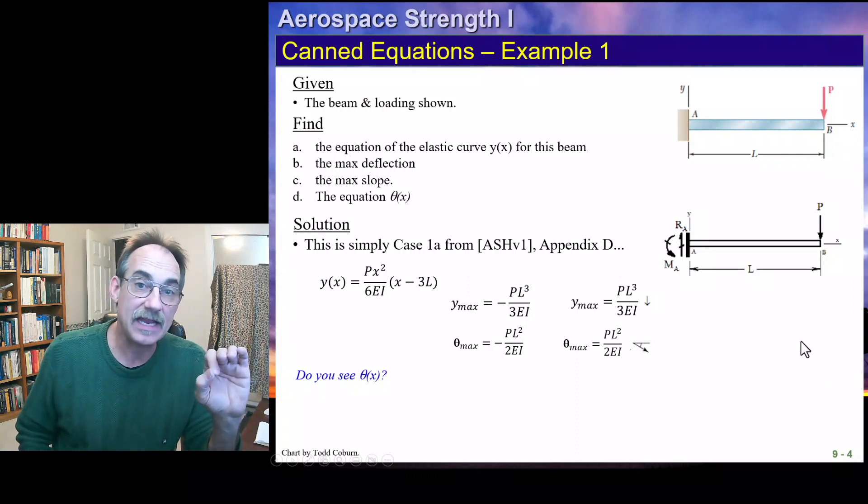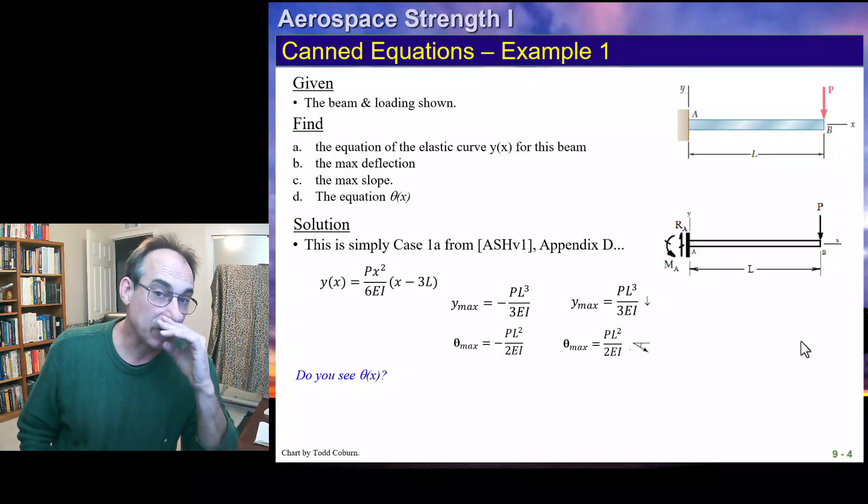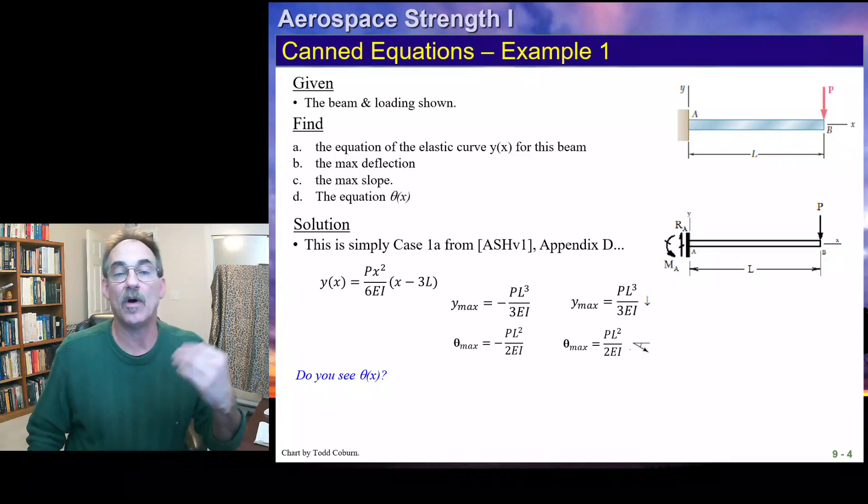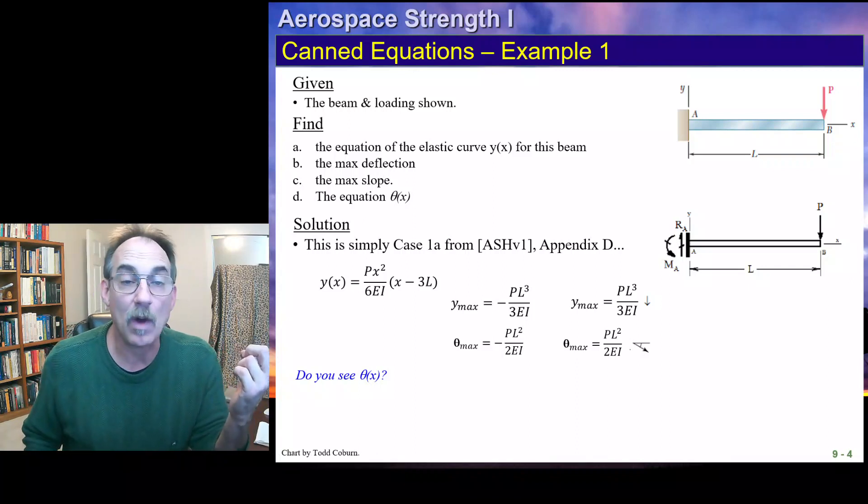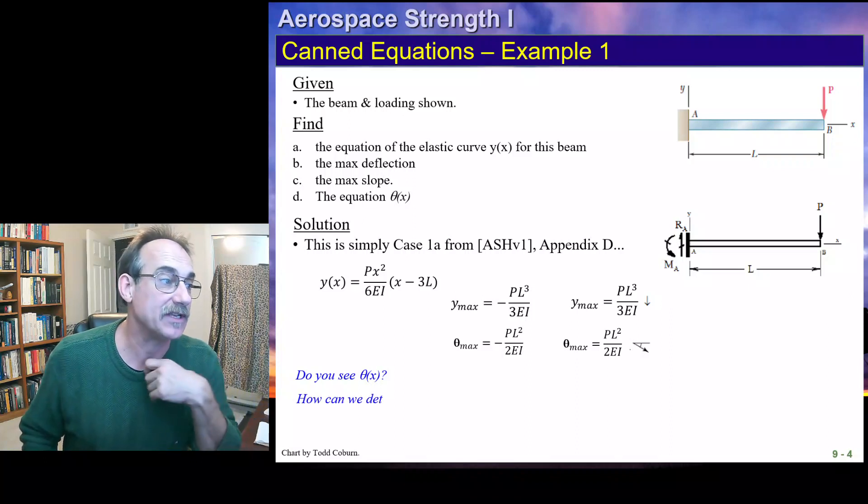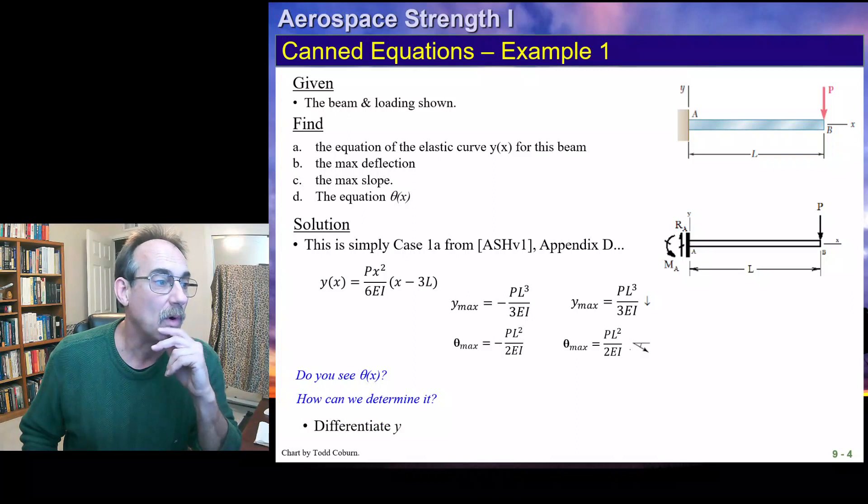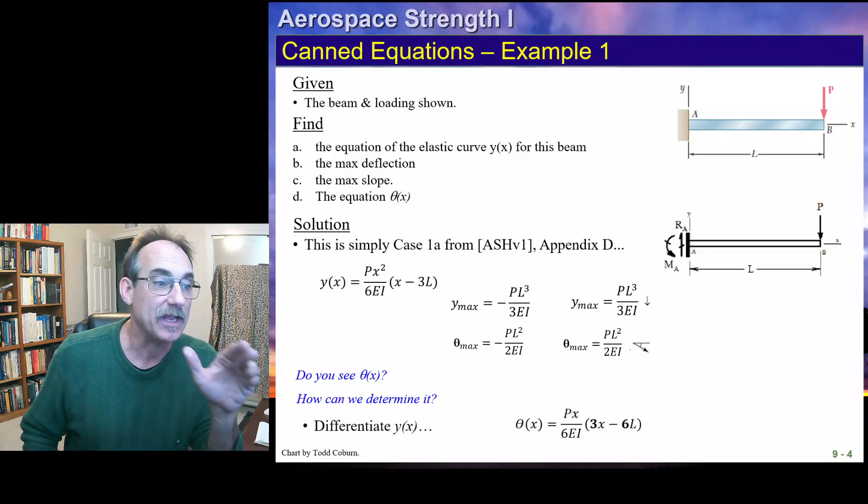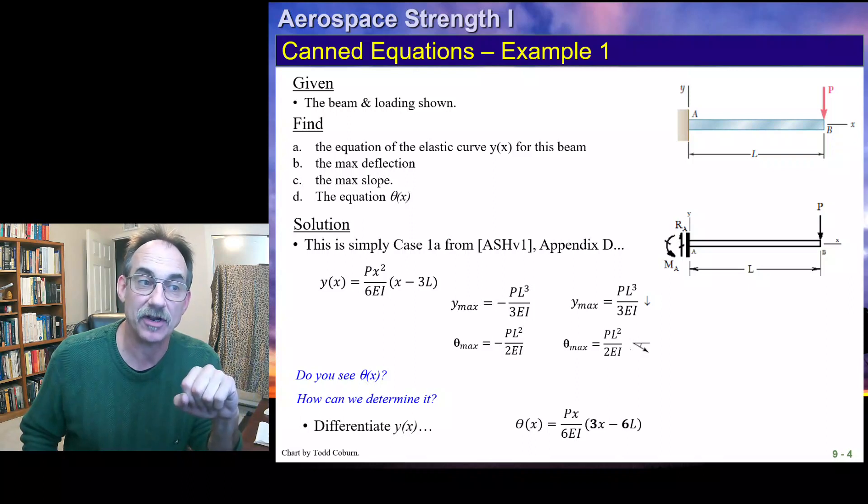Now, you'll notice there's no theta here, so in this particular case, if we want the slope of the beam, all we need to do is go back to our y of x function, differentiate it once, and that will give us the relation for the slope. And we can do it this way. That's that differentiation, and then some simplification occurring.